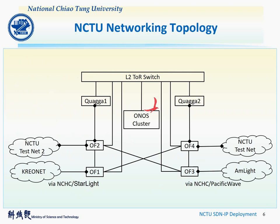From the graph showing the network topology of NCTU SDNIP deployment, you can see that the BGP speaker function is achieved by controlling four OpenFlow switches through the SDNIP function provided by the ONOS cluster, and using Quagga to exchange BGP information. Our SDNIP peering site exchanges a BGP routing table with Creonet in Korea and AMLight in the USA through the National Center of High Performance Computing of Taiwan. We created two different testing networks to verify NCTU SDNIP deployment through media streaming.